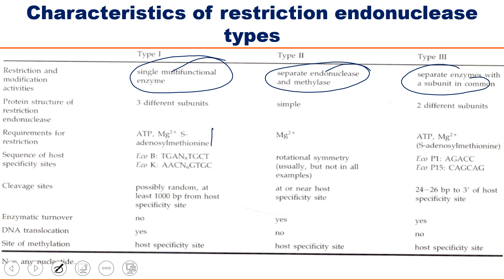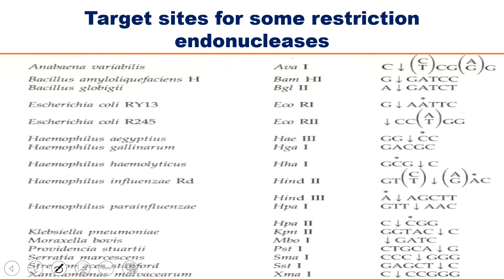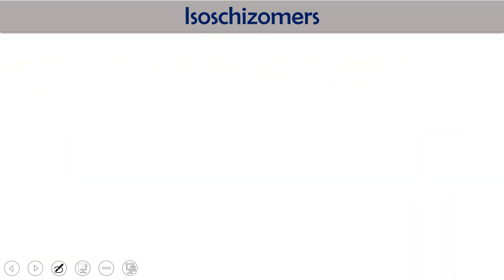Comparing all three types: Type I — single multifunctional enzyme, requires ATP + magnesium + SAM, cleaves 1000 base pairs away from recognition site. Type II — separate endonuclease and methylase, requires only magnesium, cleaves within the recognition site. Type III — separate endonuclease and methylase, requires ATP and magnesium, cleaves 24 to 26 base pairs away from the recognition site. Some example enzymes are given for each type, though not all necessarily need to be memorized.